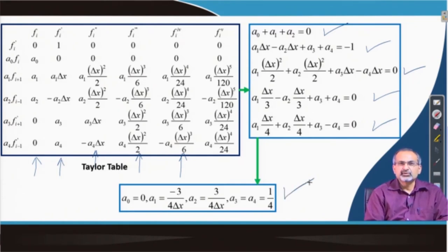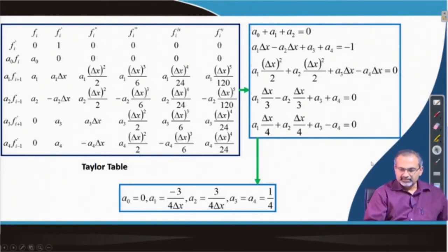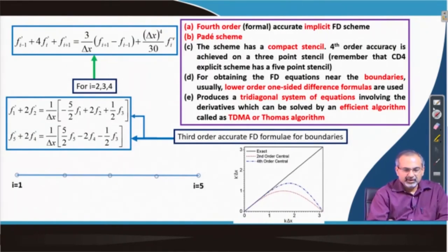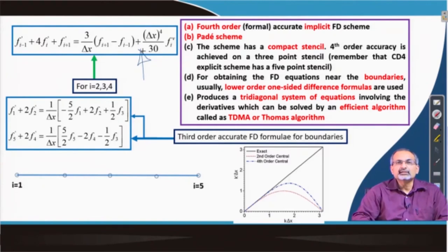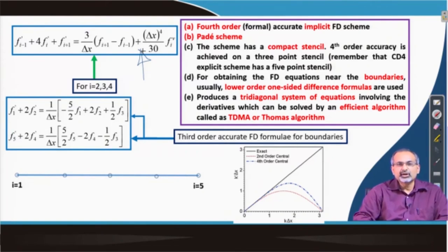If we plug these values of coefficients into the initial equation defined earlier, we get the scheme. We can show that this gives us a fourth-order formally accurate implicit finite difference scheme, because we cannot obtain the value of the first derivative at grid point i from this equation alone. We have to solve a system of simultaneous linear equations to obtain the values of the derivatives not only at that point but at all remaining points in the domain simultaneously. We can also confirm that it has fourth-order accuracy.